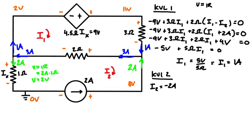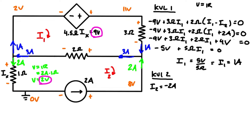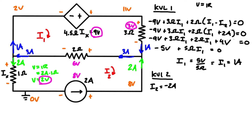For the three-ohm resistor: v = ir gives one amp times three ohms equals three volts drop, so we go from eleven volts down to eight volts. Now we have all node voltages. The one-ohm resistor drops two volts, the dependent source is nine volts, the two-ohm resistor drops six volts (eight minus two), the three-ohm resistor drops three volts, and the independent current source has eight volts across it.